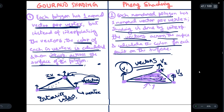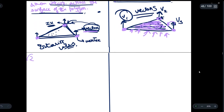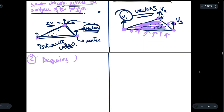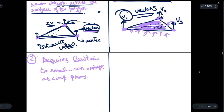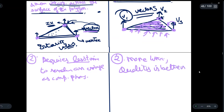The second point of difference: Gouraud shading requires less time to render an image as compared to Phong shading. Phong shading requires more time, but the quality of the image produced is better than Gouraud shading.